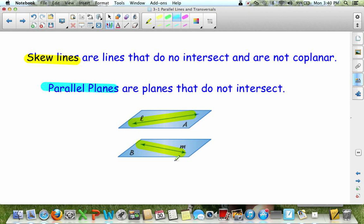Parallel planes is in your packet. It's that very large space above parallel lines. And you could put skew lines in there if you wanted to.